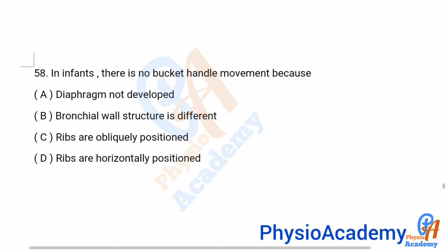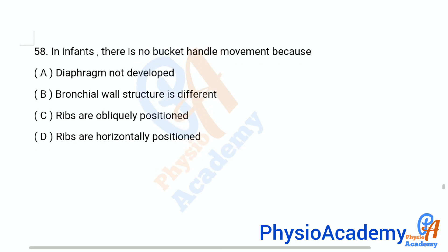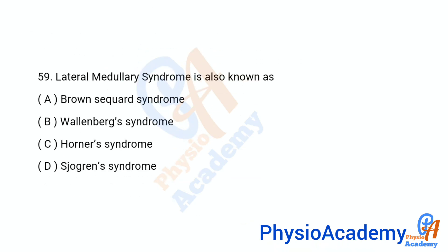Question 58: In infants there is no bucket handle movement because — Option A: diaphragm not developed. Option B: bronchial wall structure is different. Option C: ribs are obliquely positioned. Option D: ribs are horizontally positioned. The correct answer is option D, ribs are horizontally positioned.